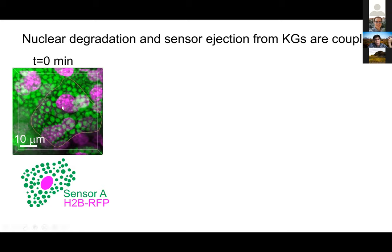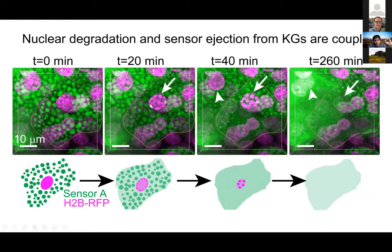We noticed that when imaging mouse skin as it's developing — imaging with a red tag on the chromatin protein H2B, together with our sensors — whenever enucleation was just beginning and we see signs of initial compaction of the chromatin, we then see immediate loss of sensor signal from within these compartments. You go from nice phase separation to signs of a different state where there is loss of that phase separation dynamic. Over the span of only 200 minutes, there is complete remodeling of these cells — from the granule state into the squame state, the dead cells at the surface of the skin. This suggests a coupling of liquid-liquid phase separation dynamics with the process of enucleation.